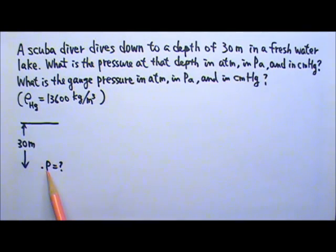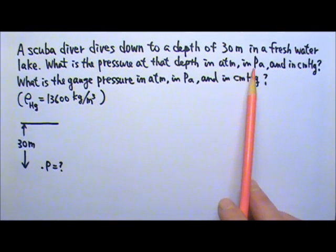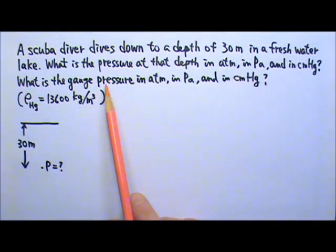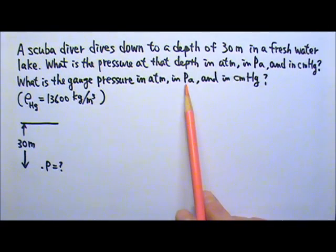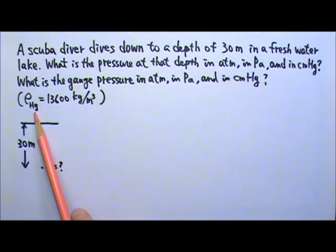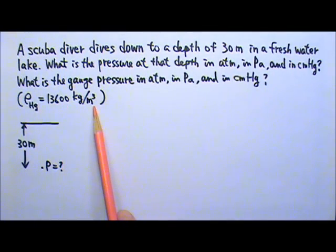A scuba diver dives down to a depth of 30 meters in a freshwater lake. What is the pressure at that depth in atmospheres, in pascals, and in centimeters of mercury? What is the gauge pressure in atmospheres, in pascals, and in centimeters of mercury? The density of mercury is 13,600 kilograms per meter cubed.